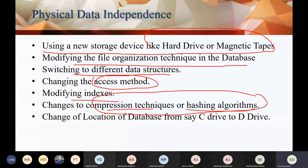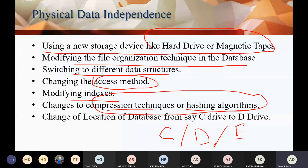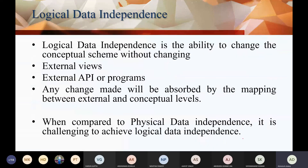For example, if you change your database location from C drive to D drive, or D drive to E drive — what you are doing here is working on the internal or physical level. So all these operations are physical data independence. In physical data independence, the upper level hierarchy — the higher level schema, which is your logical schema or view level — does not need to be updated.